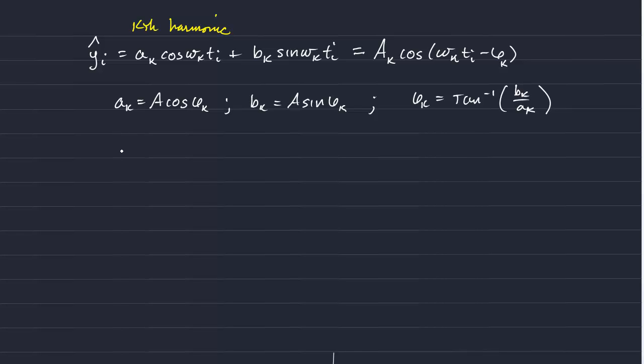And A sub k was equal to the square root of little ak squared plus bk squared. And this represents the total amplitude of that spectral component, or that harmonic.